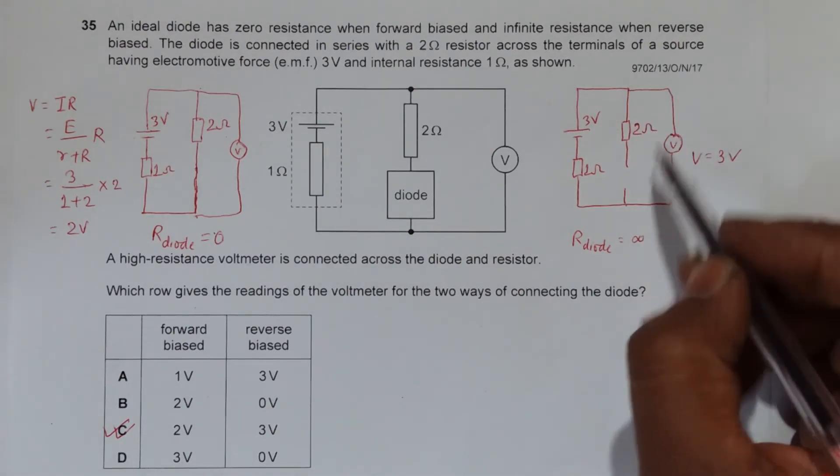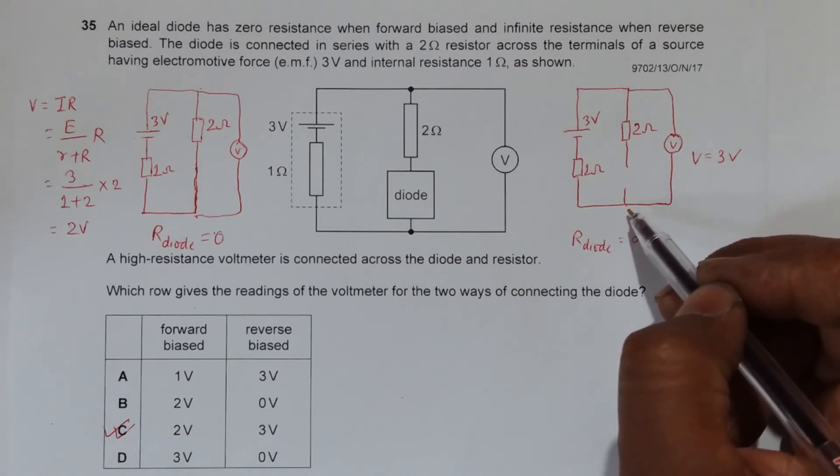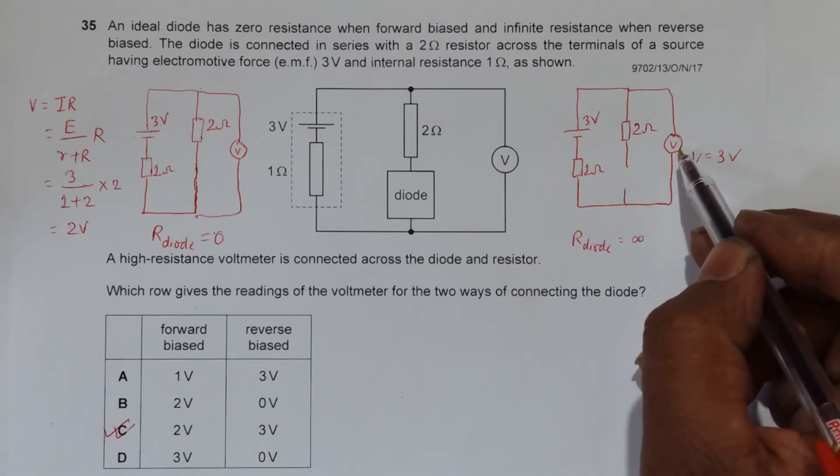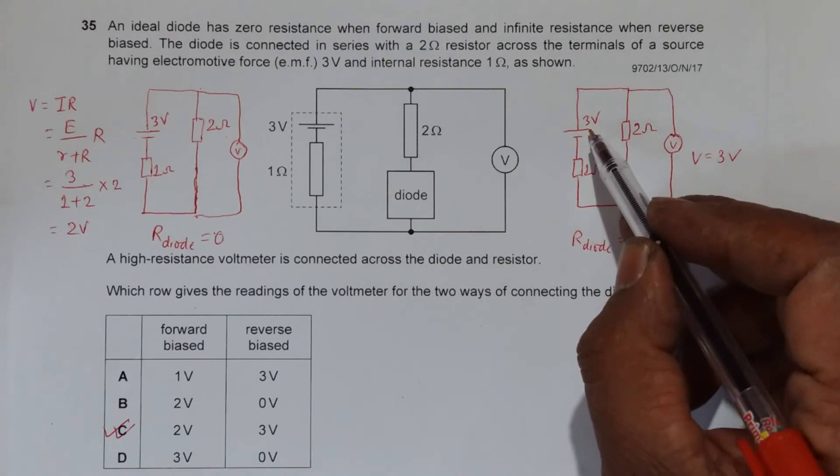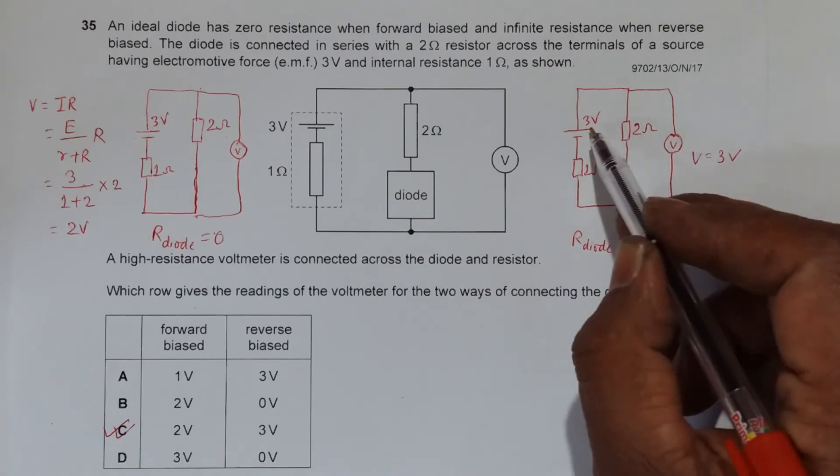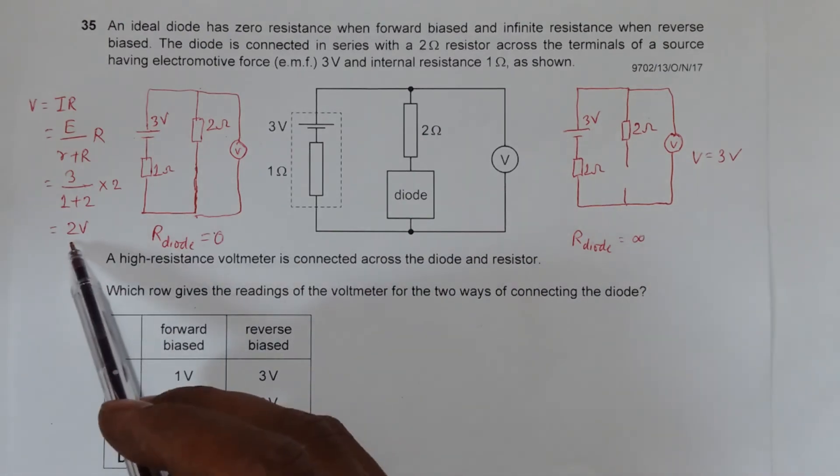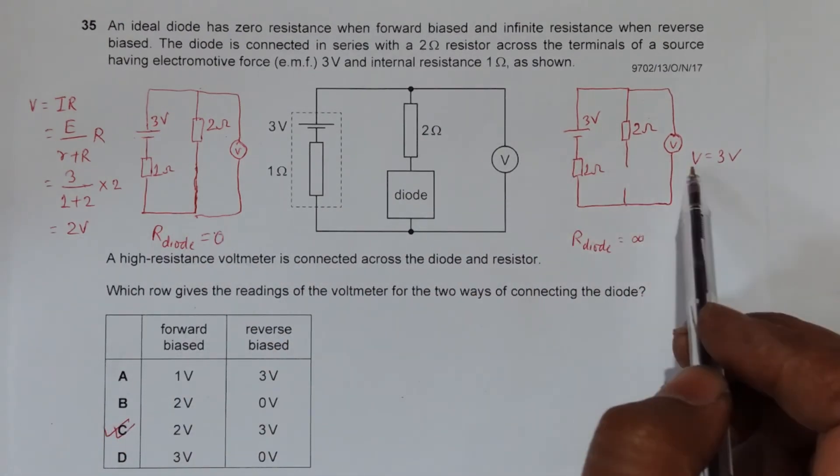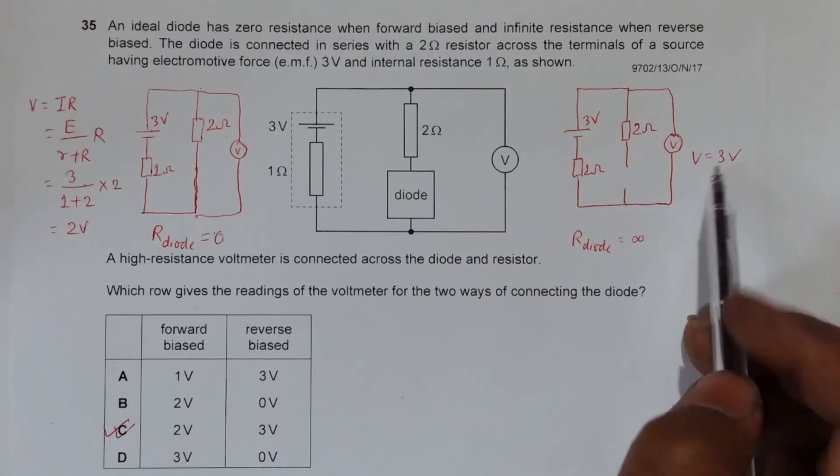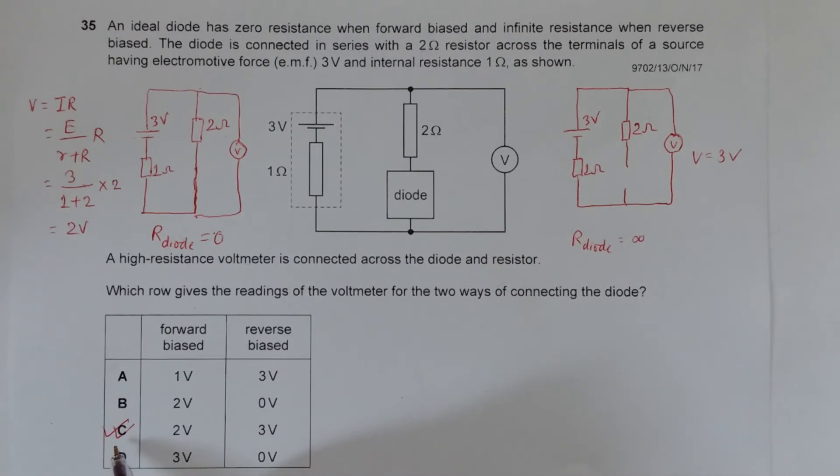So for the voltmeter which is connected across this point and this point, it will be as a break and it will show all the voltage given by the EMF. So the voltage it shows will be 3 volts as a whole. So 2 volts in this case and 3 volts in this case means that our choice C is correct here.